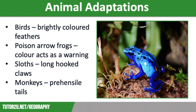We also have sloths. They have long, hooked claws that enable them to grip onto and hang from branches. They also have moss growing in their fur that helps to camouflage them. And they move incredibly slowly to avoid being spotted by predators.